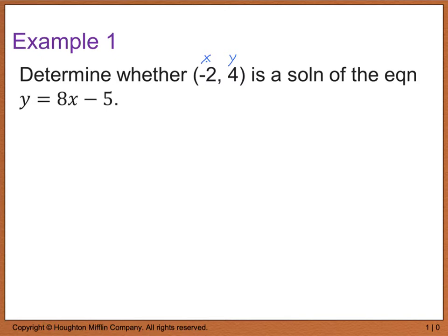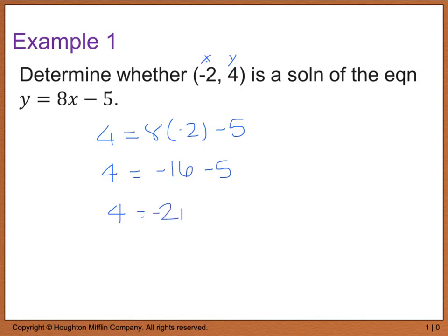So we end up with 4 equals 8 times negative 2 minus 5. If we simplify, we have 4 equals negative 16 minus 5, and negative 16 minus 5 equals negative 21. Since 4 does not equal negative 21, we say that this is not a solution.